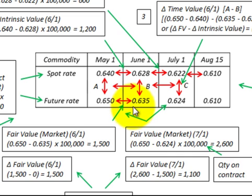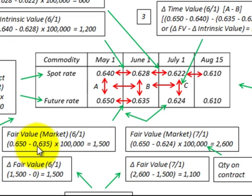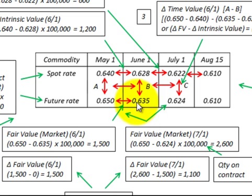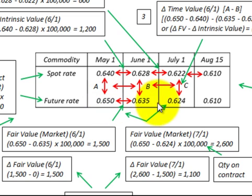At the same time, we'd be having a loss on the inventory that we're selling under contract. The opposite would be true for an increase in the futures price. To determine the amount of gain or loss, we multiply the change in our rate or price times the quantity under contract. For each successive period, we'd be comparing the futures rate at the contract start date with the current futures rate. Looking at our July 1st period, we'd compare the 0.624 futures rate with the 0.650 rate at the contract start date of May 1st, and again we'd have a decline in prices, giving us a gain on this futures contract.